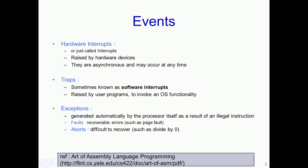Let us look at how events are classified. Various literature categorizes events in different ways, but we will follow the categorization based on a book called the Art of Assembly Language Programming, which can be downloaded from a website mentioned here. In this book, events are classified into three different types: hardware interrupts, traps, and exceptions.